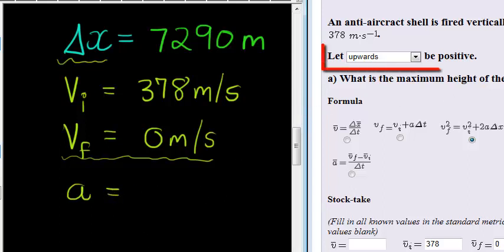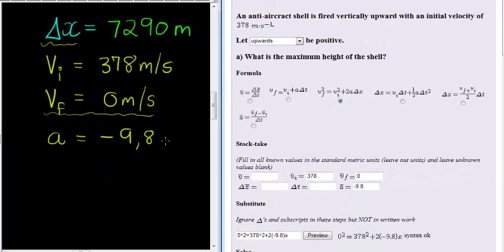Then we have acceleration. Since acceleration is downwards and we chose in our question upwards to be positive, this must be negative. Since acceleration is towards the earth, it's -9.8 meters per second squared.